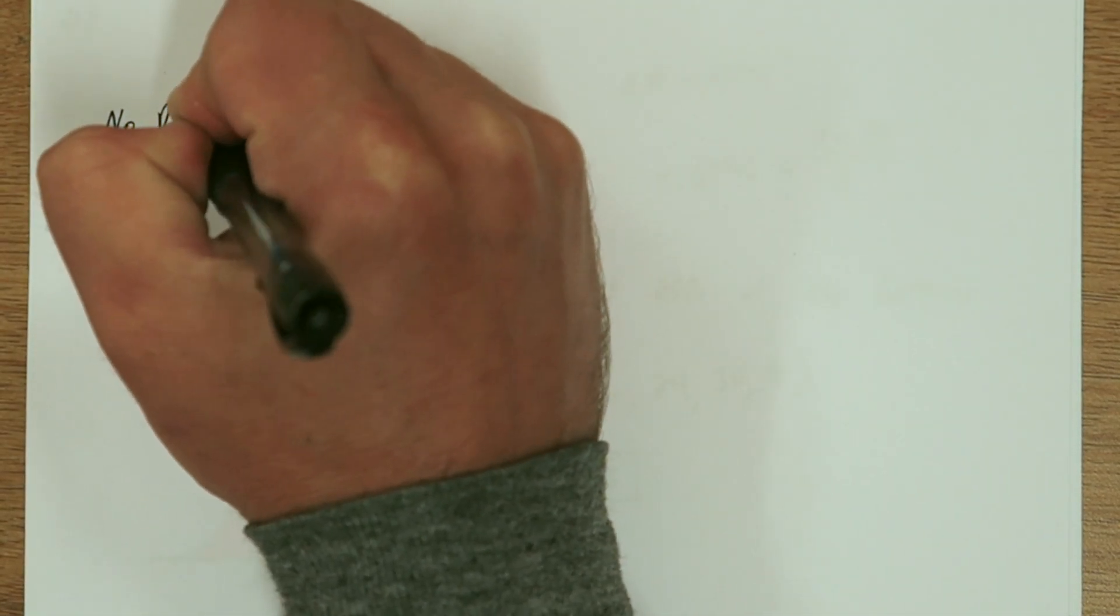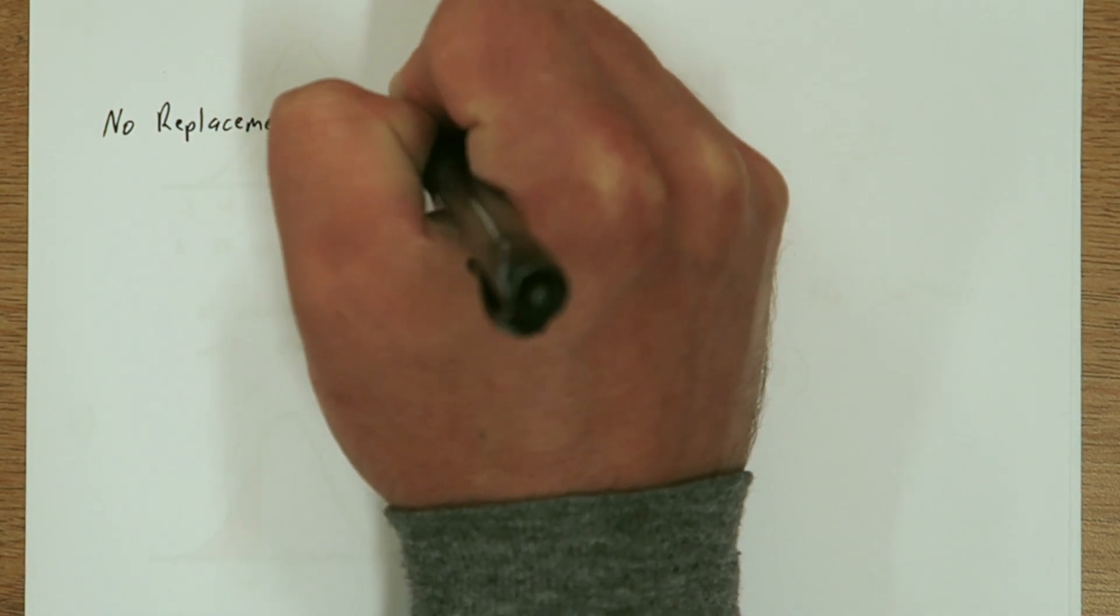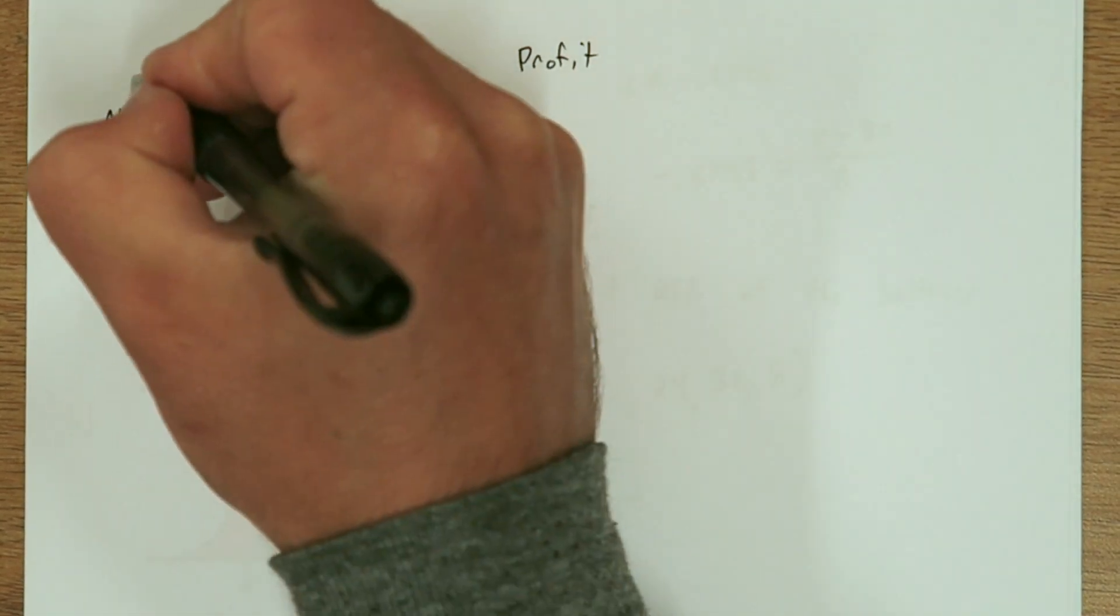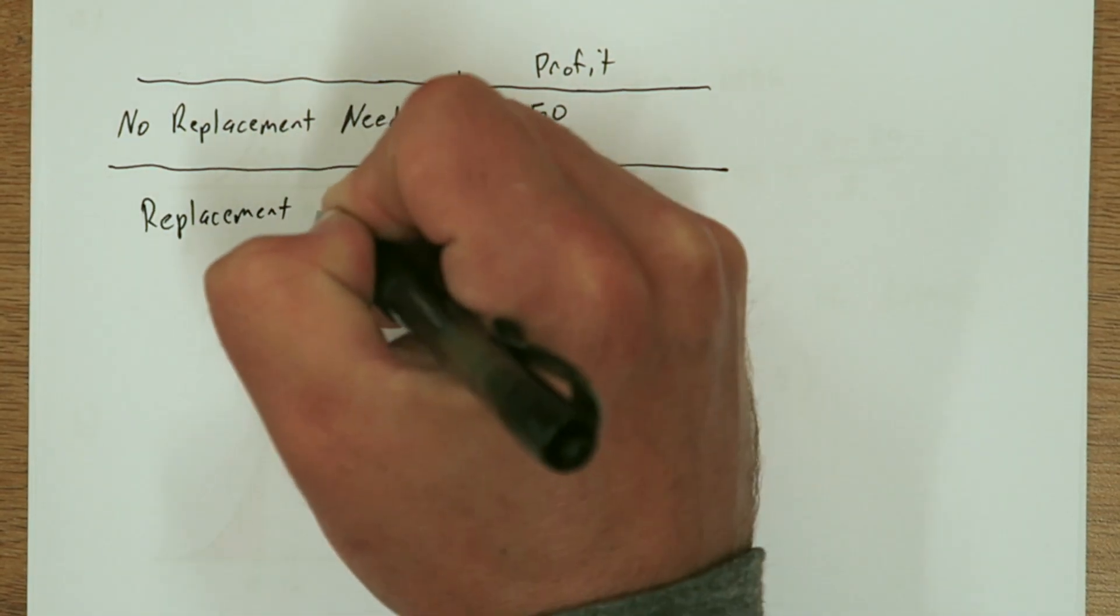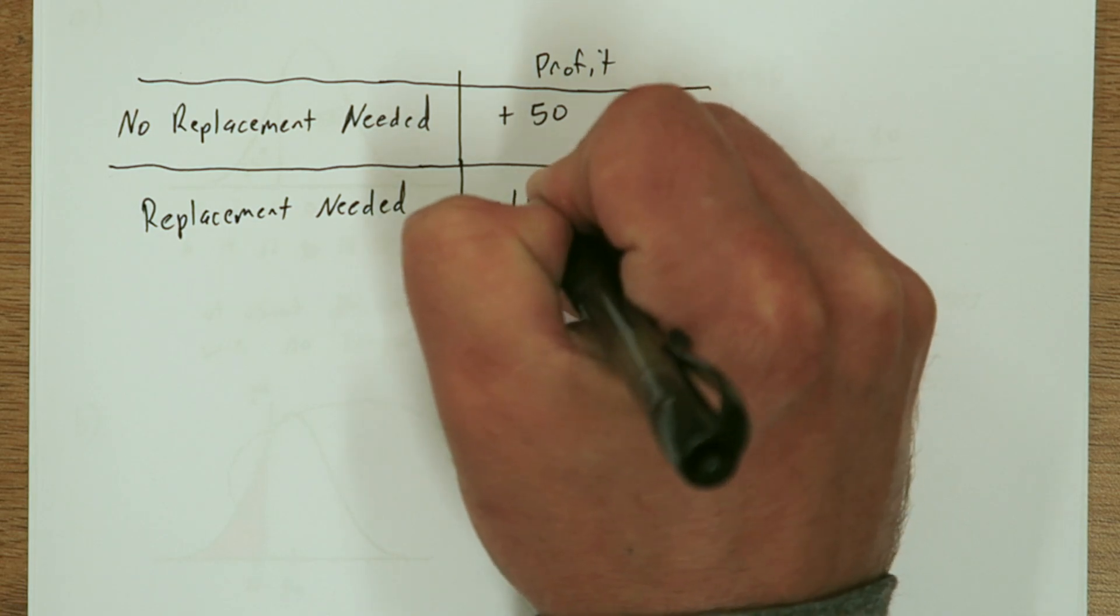In part C, they tell us a little bit more about this warranty. It turns out if the customer purchases the warranty, the company gets $50 if they don't require a replacement. But if a replacement is needed, the company loses $150.